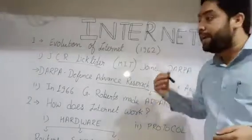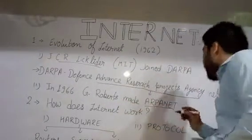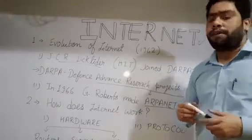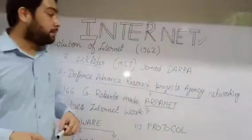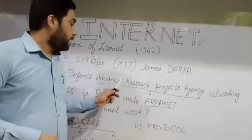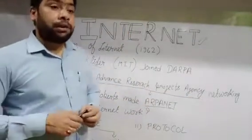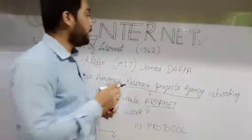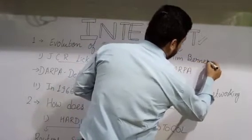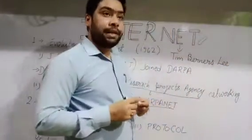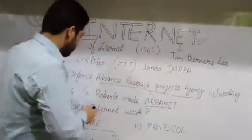In 1966, another person, G. Roberts, made another thing called ARPANET — Advanced Research Project Agency Network — which was a little bit different from DARPA. After ARPANET, the father of the internet — Tim Berners-Lee — came into the picture. Tim Berners-Lee is recognized as the father of the internet for what he contributed, which we will discuss further.